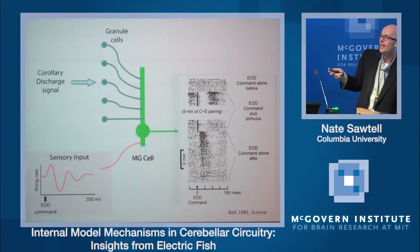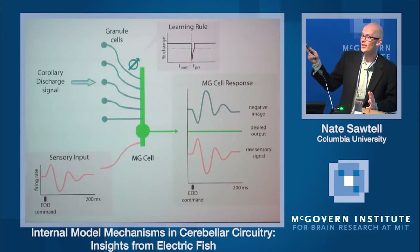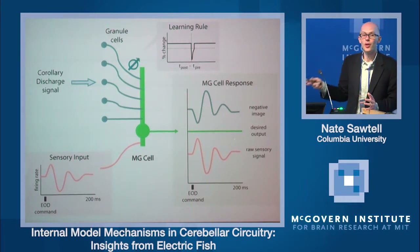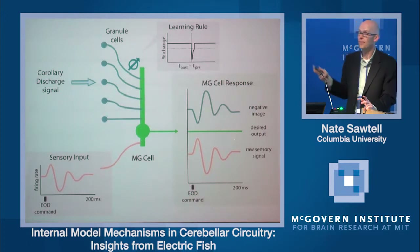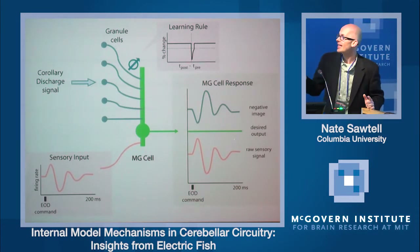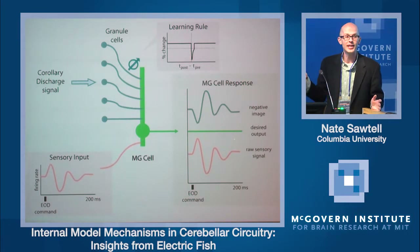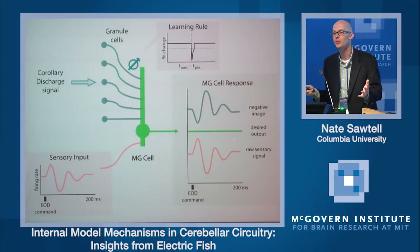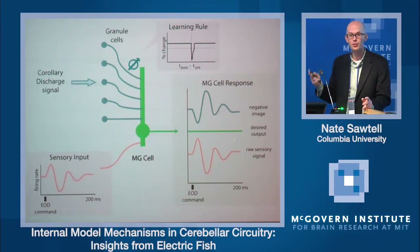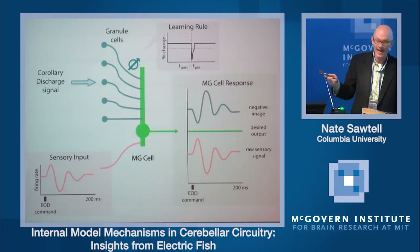The first insight into the cellular mechanisms came from slice studies that showed that the synapses conveying the corollary discharge information to the MG cells are plastic — modified by recent activity. The form of this plasticity was particularly interesting: an anti-Hebbian form of spike timing-dependent plasticity. Pre-synaptic inputs that come before or predict a post-synaptic spike are weakened; inputs coming in at different delays are strengthened. This anti-Hebbian rule is perfect for removing correlations between pre- and post-synaptic activity, and it's exactly the kind of learning rule needed to generate a negative image.